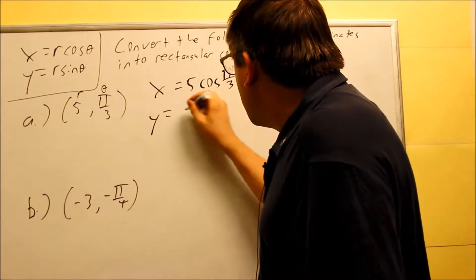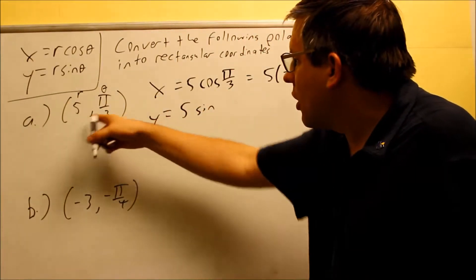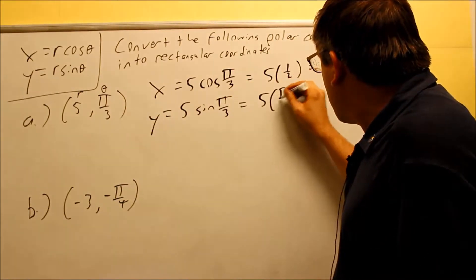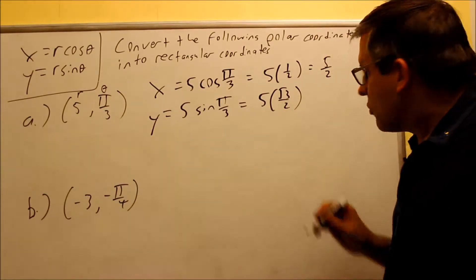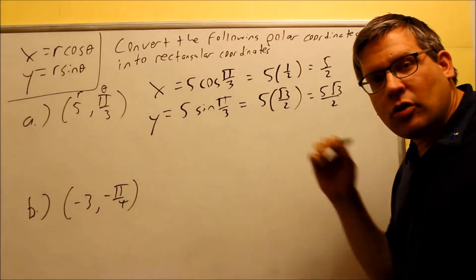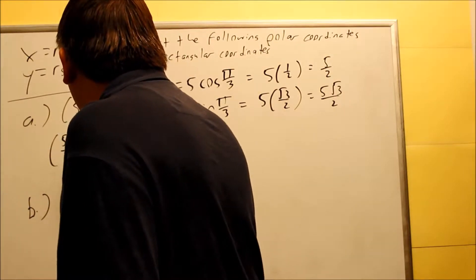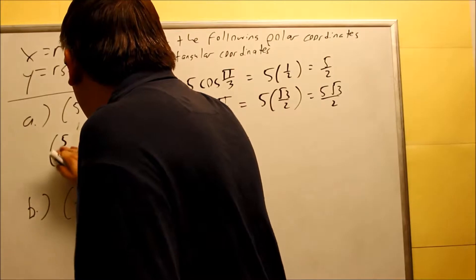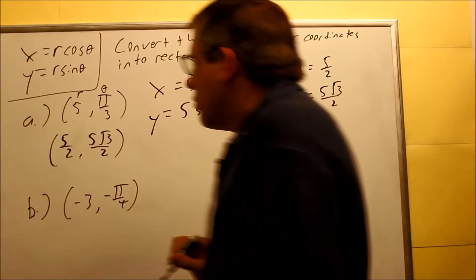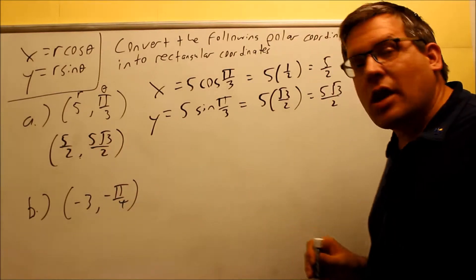I'm going to do the same thing for the y coordinate. This time I'm going to use y equals r sine theta. The r is 5 and my theta is pi over 3. When I put that in, it's going to be square root of 3 over 2 — that's the value from my table — so when I multiply that, that's 5 root 3 over 2. When I write my answer, I need to write it as a coordinate: x value comes first, so that's 5 halves, then 5 square root of 3 over 2. That's my rectangular coordinate, always written as x comma y.